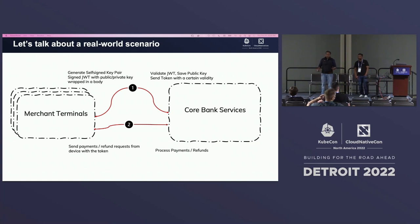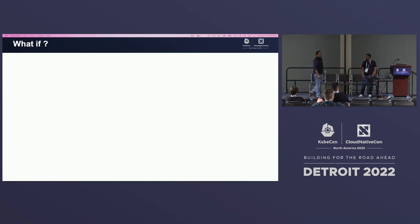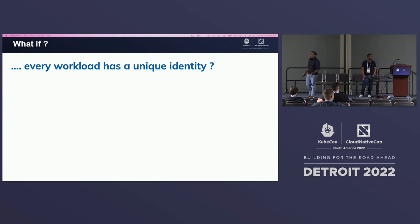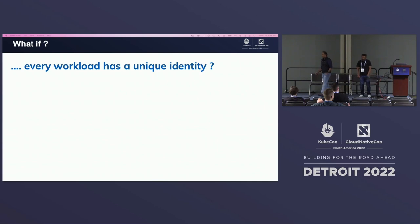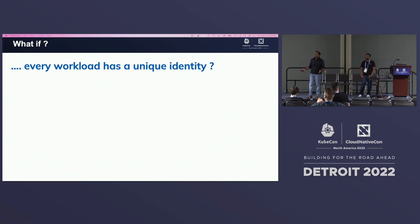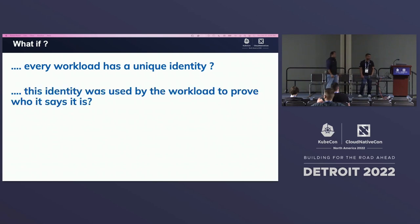It also introduced the notion of fraud, where a fake merchant or someone with an old terminal would use it to process refunds, which translated to millions of dollars of loss for this bank. As we thought about this, we asked: what if every workload had a unique identity? If you're in this session, you're probably interested in SPIFFE and what it can do. If you're thinking about TLS and X.509, you're probably familiar with CertManager. We're essentially mapping these 'what ifs' to scenarios where you'd use CertManager, SPIFFE, and a few other things.